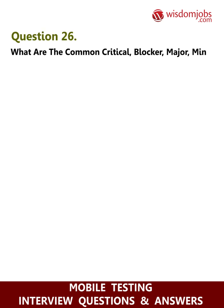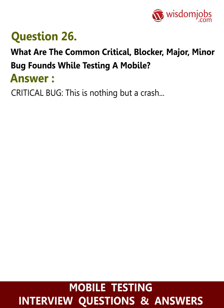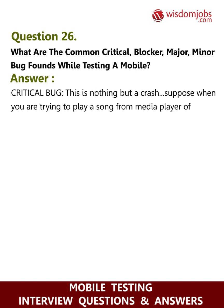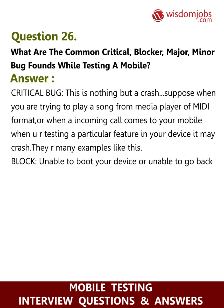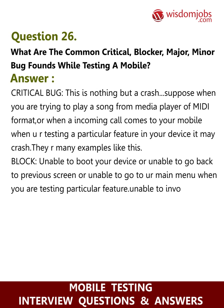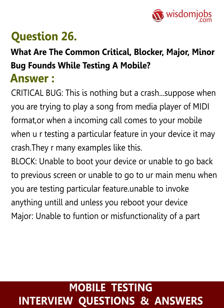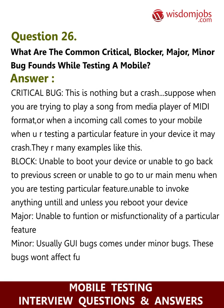Question 26: What are the common critical, blocker, major, and minor bugs found while testing a mobile device? Critical bug: This is a crash — for example, when playing a song in MIDI format or when an incoming call crashes a feature being tested. Blocker: Unable to boot the device, unable to go back to a previous screen, or unable to reach the main menu until the device is rebooted. Major: Unable to function or missing functionality of a particular feature. Minor: UI bugs such as overlapping of letters in the message compose screen.